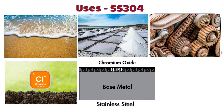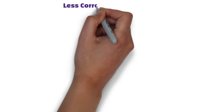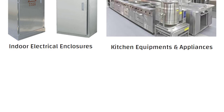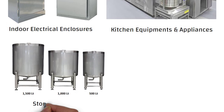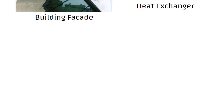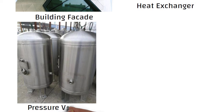That's why SS304 is best suited for less corrosive environments such as indoor electrical enclosures, kitchen equipment and appliances, storage tanks, wheel covers, building facades, heat exchangers, pressure vessels, and other applications involving fresh water environments.